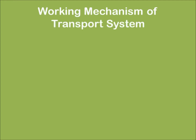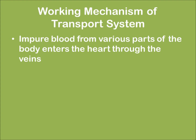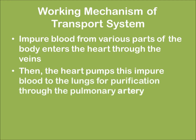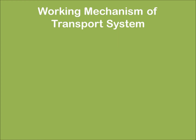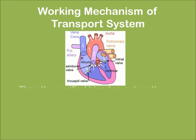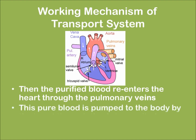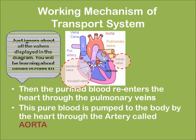Now let us look at the working mechanism of the transport system. Impure blood from various parts of the body enters the heart through the veins. Then the heart pumps this impure blood to the lungs for purification through the pulmonary artery. Then the purified blood re-enters the heart through the pulmonary veins. This pure blood is pumped to the body by the heart through the artery called the aorta, which is the largest artery in the human body.